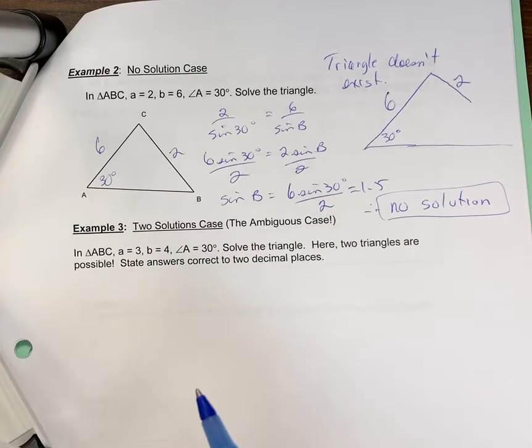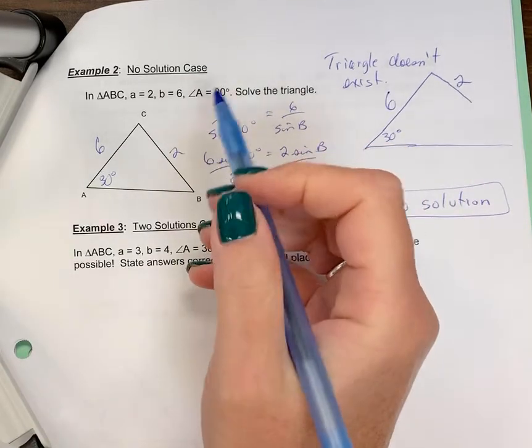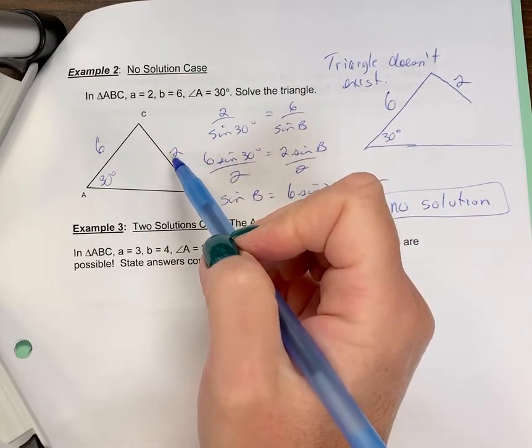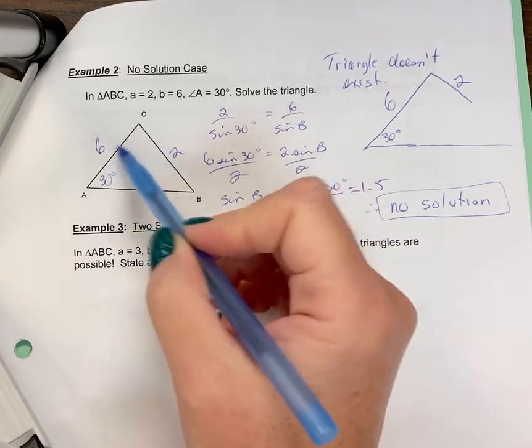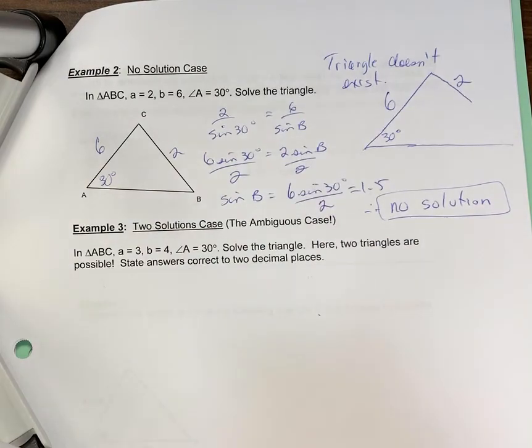So you would find out in the first step. Otherwise, you would compare. At first, it would look like it may be two solutions, because this is a smaller side. But if it's quite a bit smaller than the other side, significant enough, then you can also tell it's no solution.